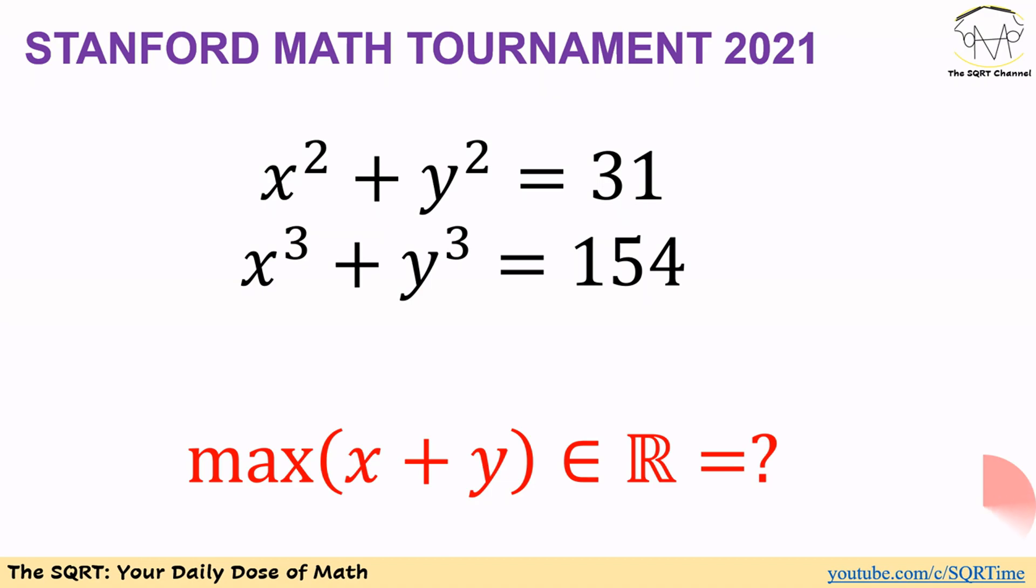On the other hand we know that x cubed plus y cubed equals 154. Considering these two equations, we are looking to find the max value that we can have for x plus y.